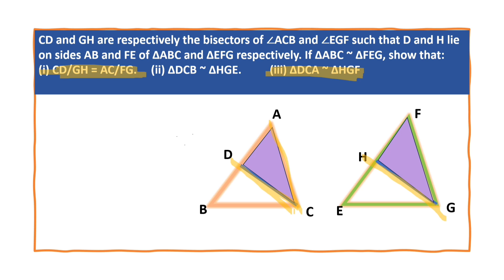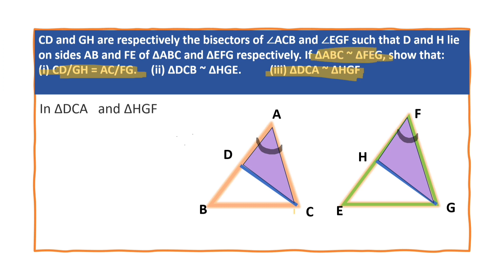Now we have to prove triangle DCA is similar to triangle HGF. This is nothing but the third problem. So first let us solve the third one. In triangle DCA and triangle HGF, we have angle A is equal to angle F. Why? Already we know that triangle ABC is similar to triangle FEG. So now let us write angle DAC is equal to angle HFG. Why? Triangle ABC is similar to triangle FEG.